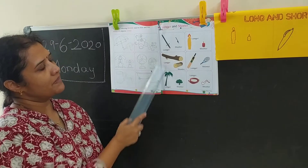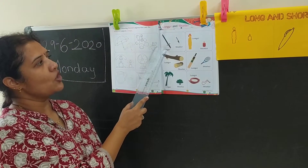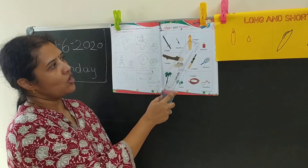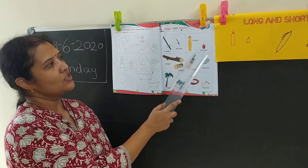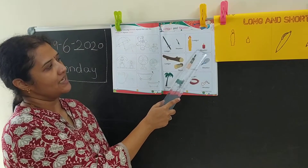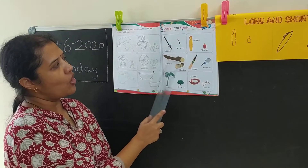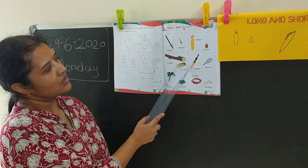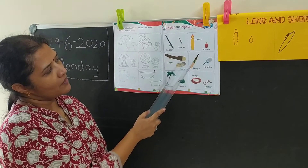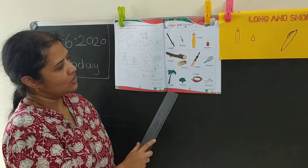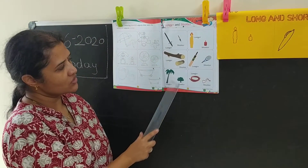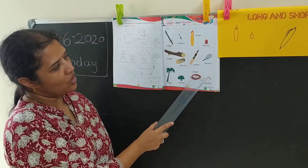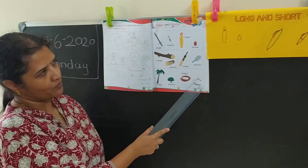Now let's look at the pictures. Long sword, short knife. Long candle, short candle. Long wooden log, short wooden log. Long back, short back. Long tree, short tree. Long rope, short rope.